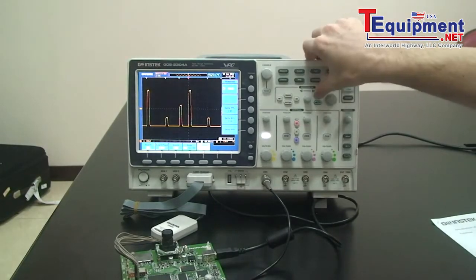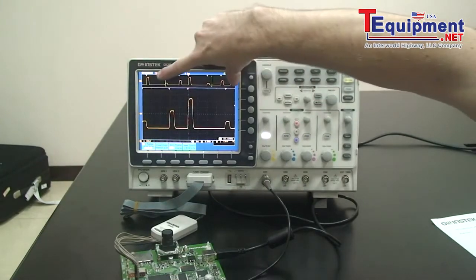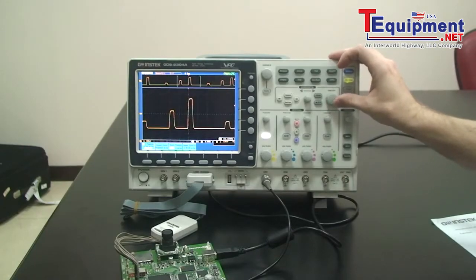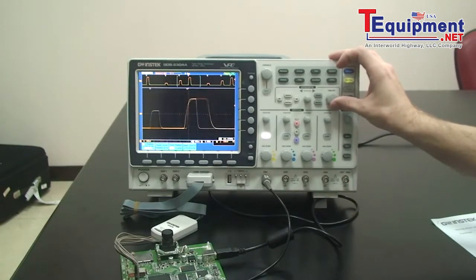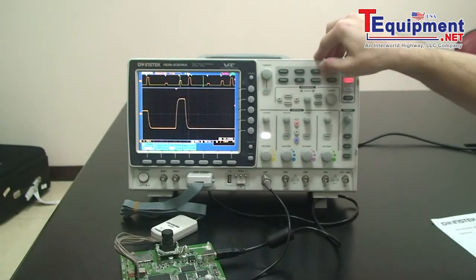We can also use the zoom key to have the full memory length at the top and the zoom portion at the bottom. We can use the time division key to change the zoom window to zoom in or out, and we can press play to play through the waveform as well.